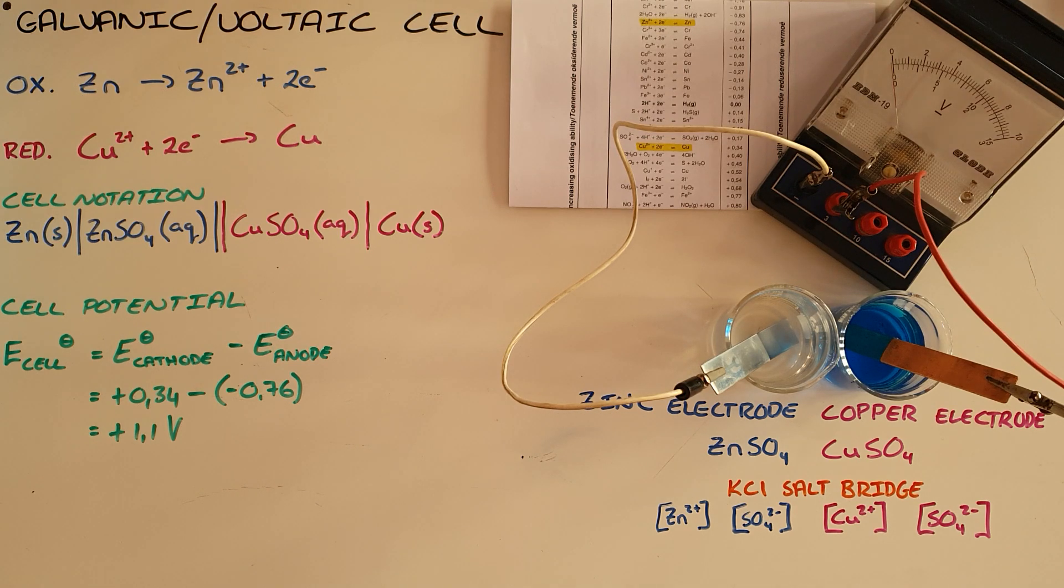So the setup that we have here, I have a zinc electrode that is placed in a solution of zinc sulfate and a copper electrode that is placed in a solution of copper sulfate.